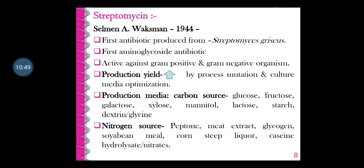Streptomycin was the first aminoglycoside antibiotic, discovered by Waksman in 1944. It is very active against both gram-negative and gram-positive organisms. The main use of streptomycin is for the treatment of tuberculosis due to its strong activity against Mycobacterium tuberculosis. Streptomycin was the first antibiotic produced from the Streptomyces genera — specifically Streptomyces griseus, an actinomycete. Streptomycin and dihydrostreptomycin are basic compounds usually prepared as salts. Streptomycin at high dosage may produce neurotoxic reactions.